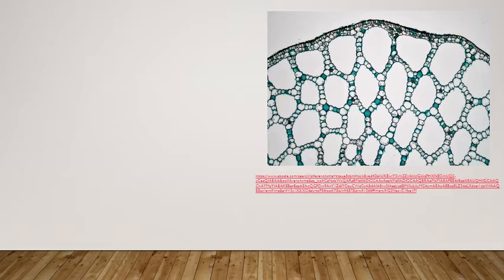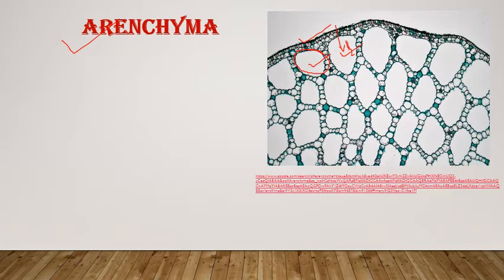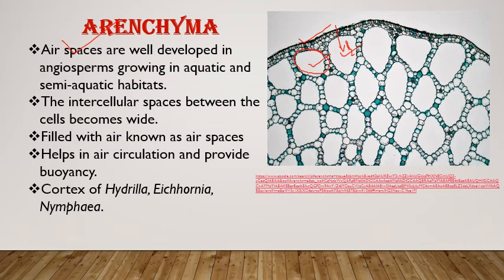Next we can see the TS of Potamogeton, which is a hydrophyte. In hydrophytes, large air spaces are found due to disintegration of the cortical region, creating big air spaces filled with oxygen. They help in air exchange and their main function is to increase buoyancy — the floating capacity of the plant. This type of parenchyma present in hydrophytes or semi-hydrophytes is called aerenchyma — 'aer' means air spaces or air chambers.